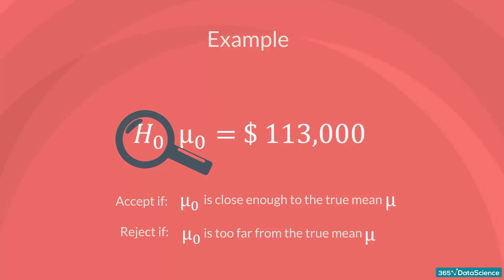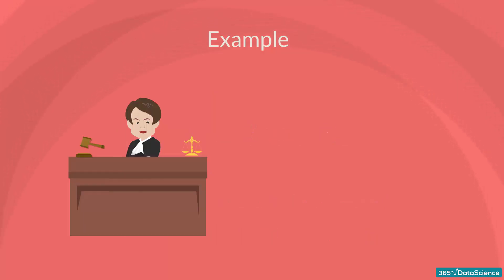The concept of the null hypothesis is similar to: Innocent until proven guilty. We assume that the mean salary is $113,000, and we try to prove otherwise. Alright, this was an example of a two-sided or a two-tailed test.